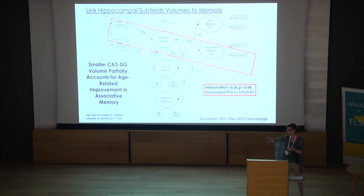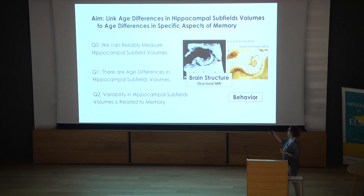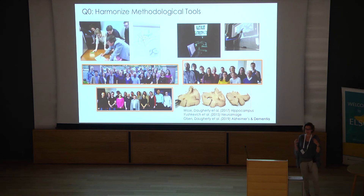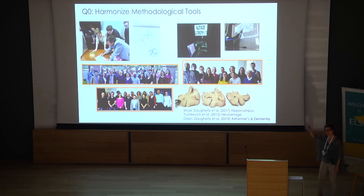We found specific subfields related to exactly the one aspect of memory that differs by age. Of course, there is a lot of work to continue. On the question of reliable measurement, we're still working hard. One key challenge is harmonization — everyone in the field must agree on where boundaries between subfields are placed, so that any observed differences reflect the same anatomical region. This process has been ongoing for many years and is progressing slowly because many people must agree.